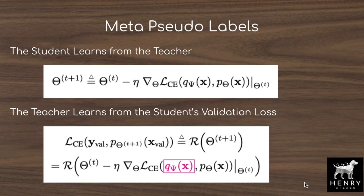There are two phases of learning in the MetaPseudoLabels framework. In phase one, the student learns from the teacher. The parameters theta of the student are updated by taking the cross-entropy loss between predictions p_theta(x) and the pseudo label distribution q_phi(x) from the teacher, parameterized by phi.